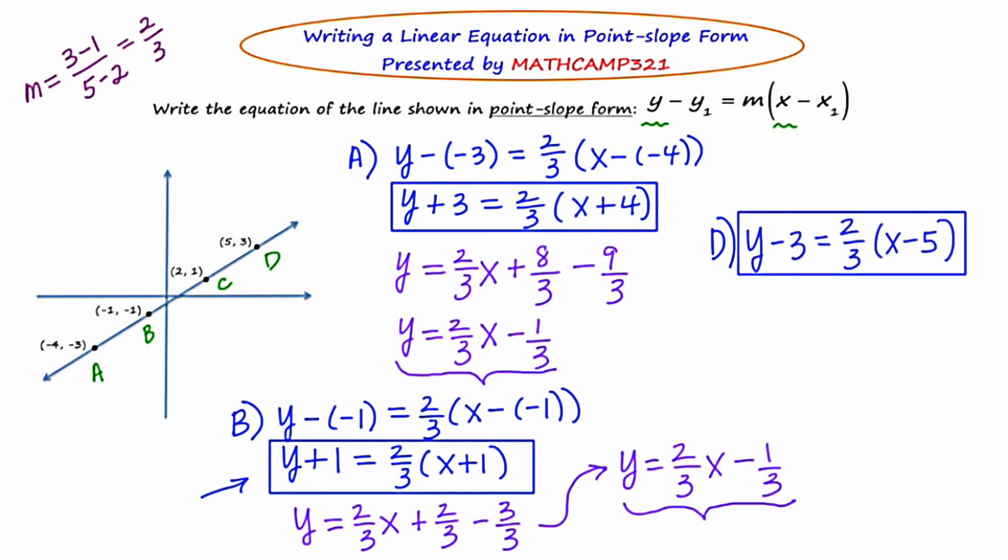And now just as a check, I'll write this as slope-intercept form to make sure we're definitely working with the same line. So I'll start by distributing the 2 thirds through. It's time for me to add 3 to both sides. But instead of adding 3, I'm going to add 9 thirds. Simplifying this, I end up getting y equals 2 thirds x minus 1 third. And once again, all of these lines boil down to the same thing. Y equals 2 thirds x minus 1 third. Yet all of their point-slope forms were different because you could pick any point that you want.